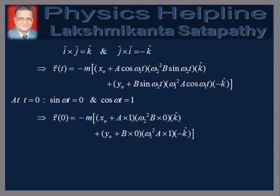At T equals zero, sin(ωT) equals 0 and cos(ωT) equals 1, irrespective of whether we have ω₁ or ω₂. This gives τ(0) equals minus m(X₀ plus A)(1)(ω₂²B)(0) k̂ plus (Y₀ plus B)(0)(ω₁²A)(1)(minus k̂).